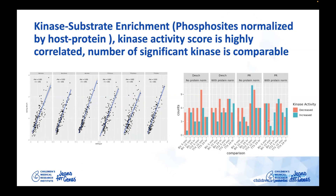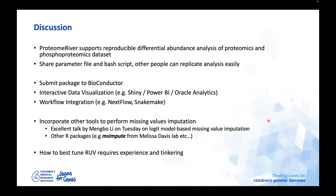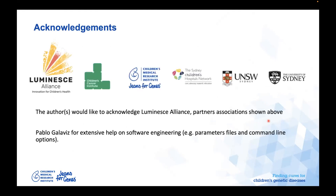The kinase-substrate enrichment scores and the number of enriched kinases are very similar between my analysis and the original publications. To wrap up: Proteome River supports reproducible differential abundance analysis of proteomics and phosphoproteomics data. Sharing the parameter file and batch scripts allows others to replicate the analysis easily. Future work includes submitting the package to Bioconductor, improving data visualization, exploring workflow integration, and refining missing value imputation approaches. RUV does require some experience and tinkering to fine-tune.